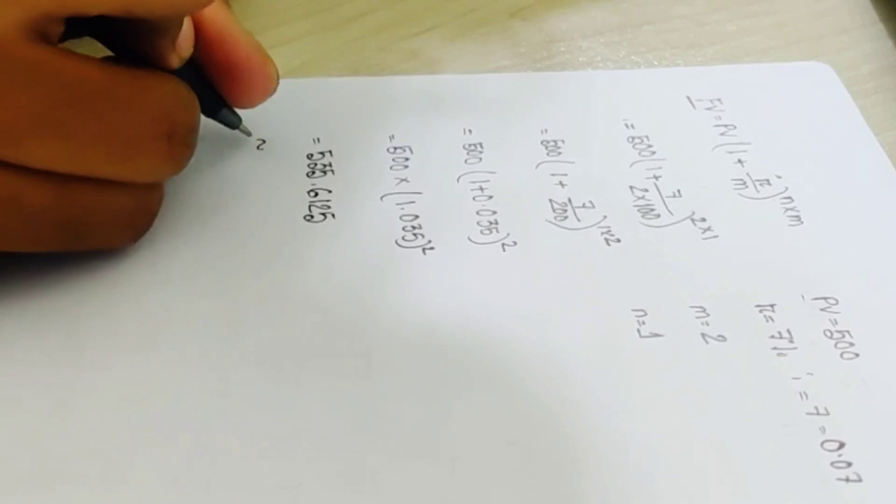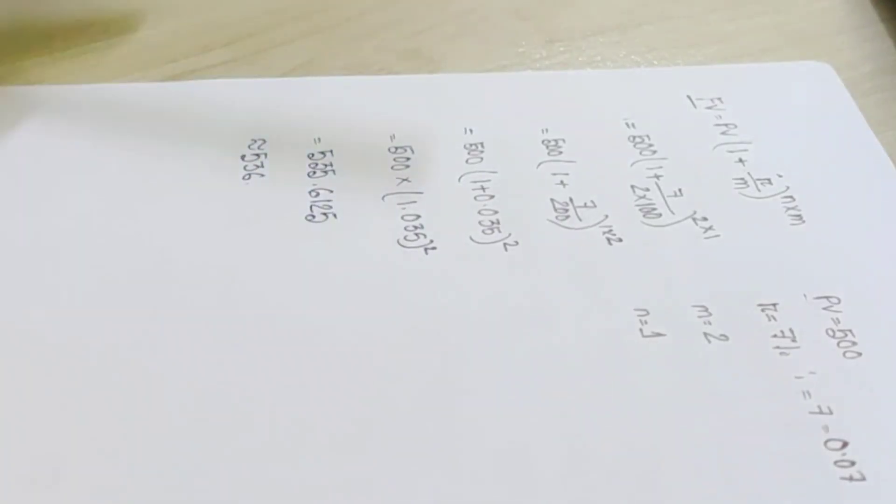We can write 2 plus 0.035 and we can write 1 plus 0.035 and we can write 536. That's the answer!